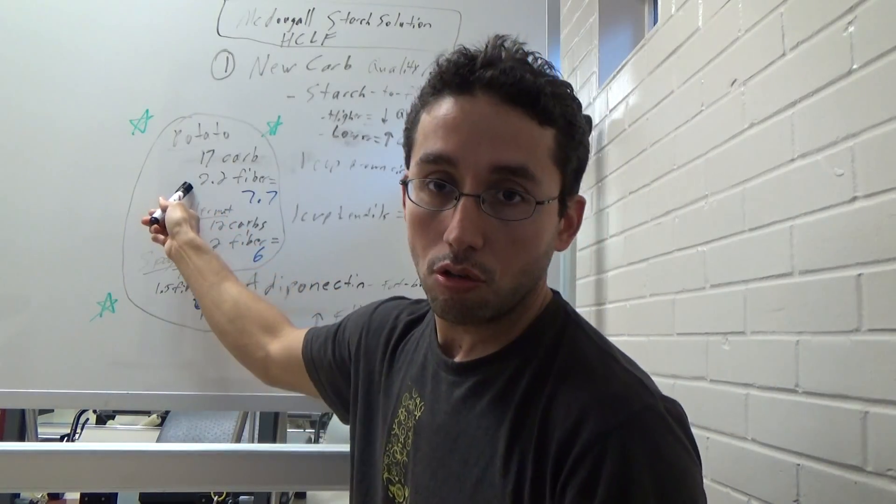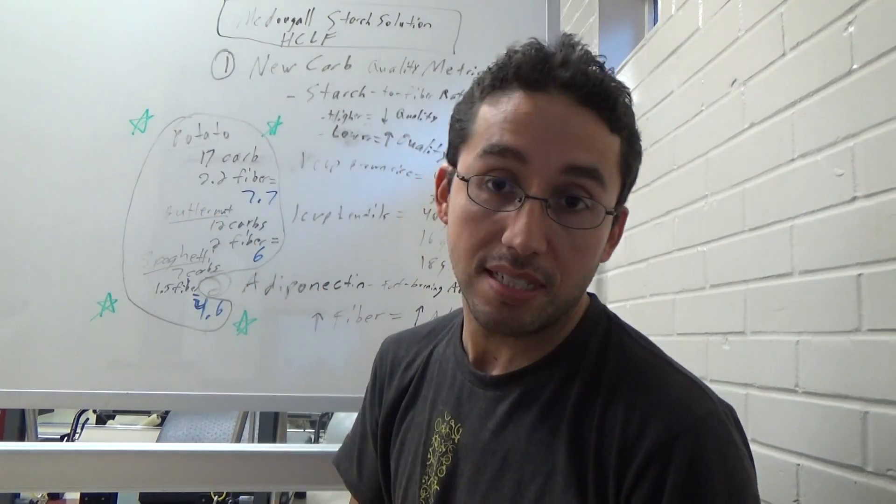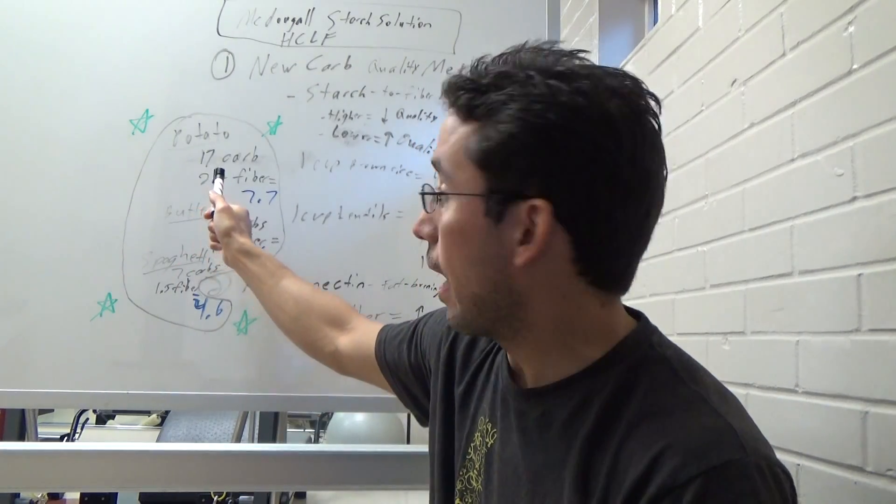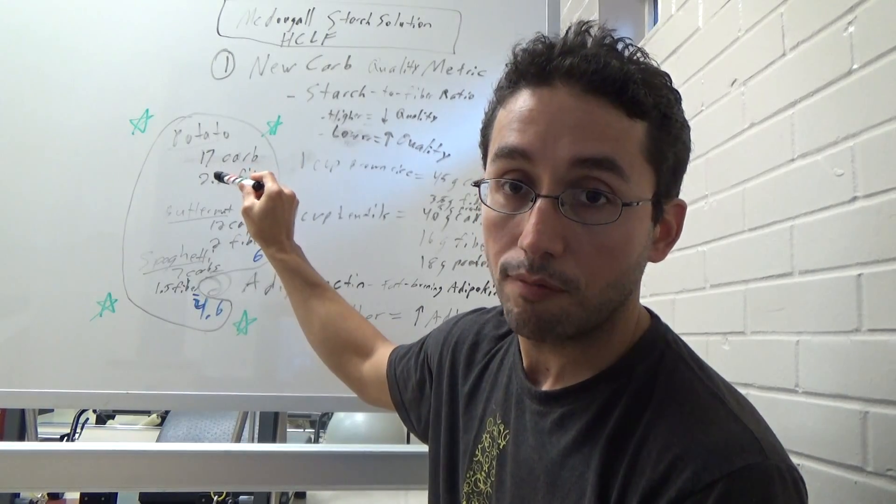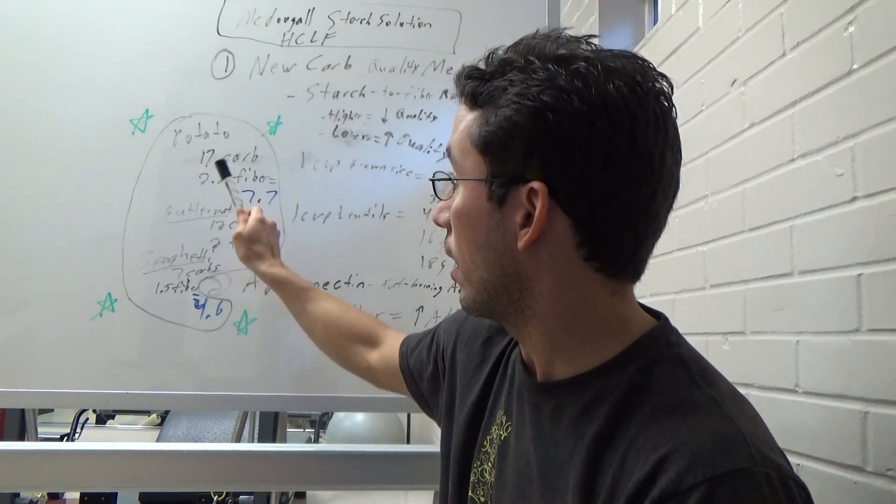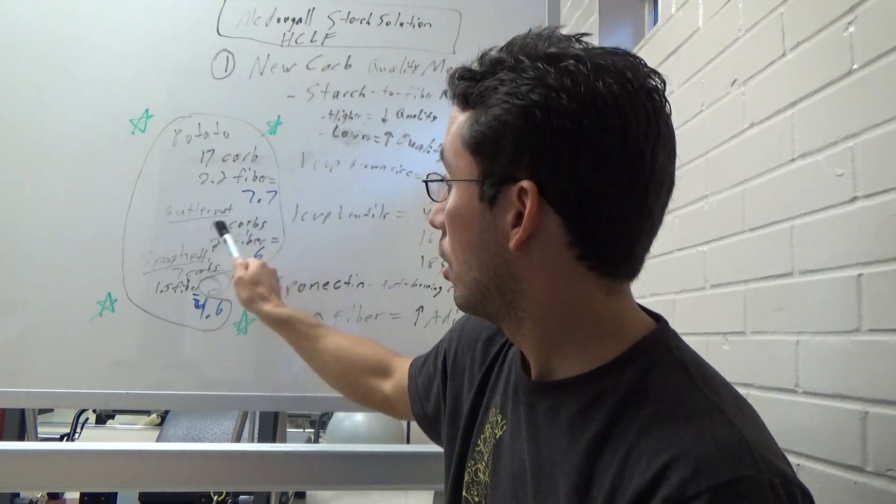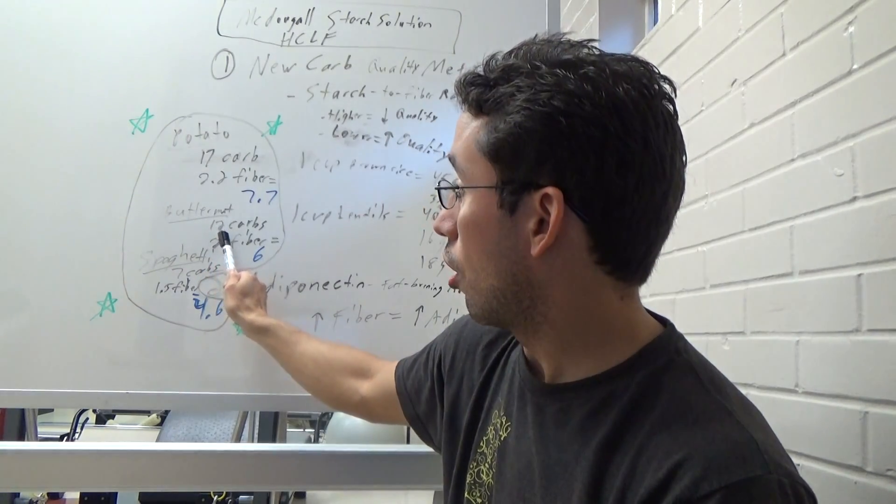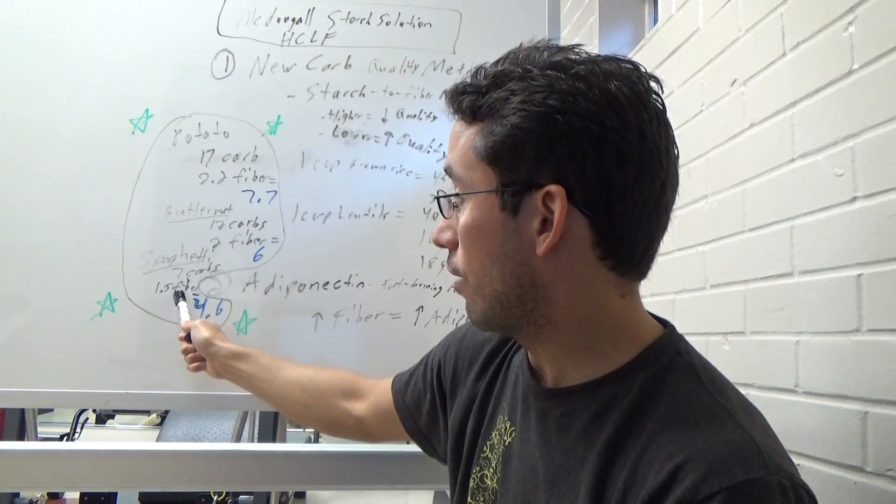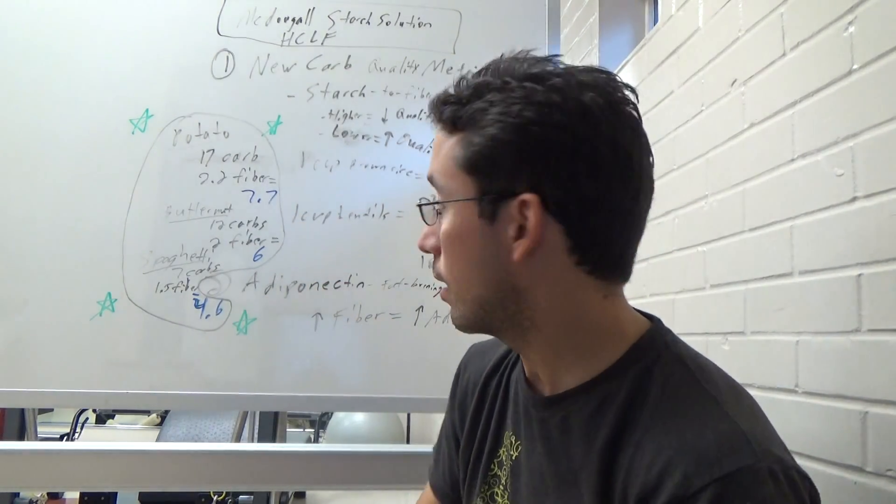This cool little circle here, we're going to get to adiponectin. That's going to be my finisher. Look at this here. We got potatoes, white potatoes, supposed to be real good and healthy on a vegan diet. I went ahead and equalized this to 100 grams. So, 100 grams of potato, 100 grams of butternut squash and 100 grams of spaghetti squash. Potato, 17 grams of carbs in 100 grams, 2.2 grams fiber. That's a 7.7 ratio. Butternut squash, 12 grams carbs, 2 grams fiber, it's a 6. Spaghetti squash, 7 grams of carbs, 1.5 grams fiber, 4.6. Do you see what I'm getting at? Do you see the science of fat loss here? Let's go right into the finishing point.